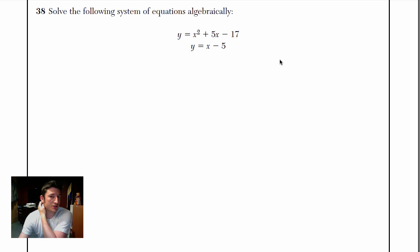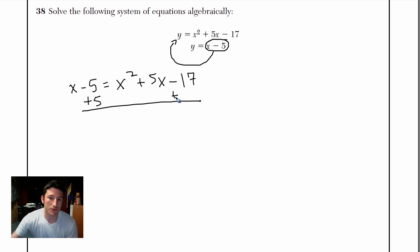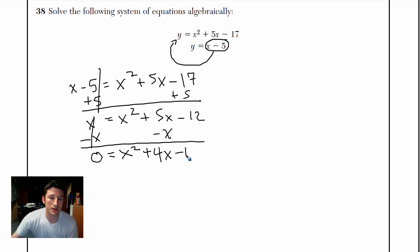Number 38 says solve the following system of equations algebraically. They give us two equations right here. It looks like what we're probably going to have to do is plug in one into the other. Since this one is the simpler one, the one on the bottom here, we're going to take this information here, x minus 5, we're actually going to put it in right over there and solve the equation. We're just going to write x minus 5 equals all that stuff, x² + 5x - 17. Now let's solve. Let's bring everything over to one side. Plus 5, plus 5, that crosses out. x² + 5x - 12. Last thing I'll do is I'll minus the x's from both sides, minus the x. So we get 0 = x² + 4x - 12.